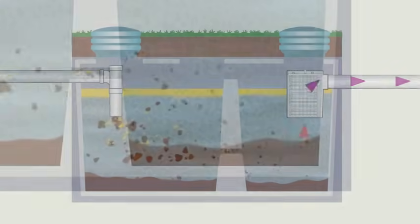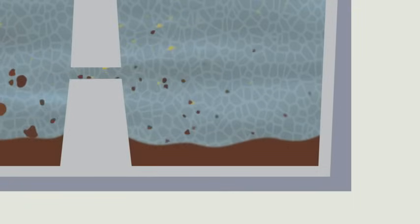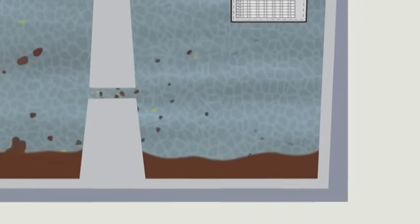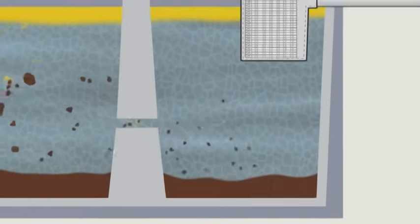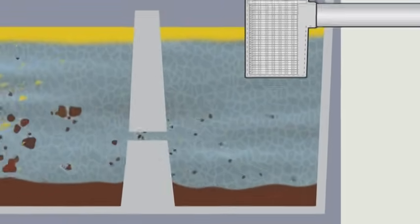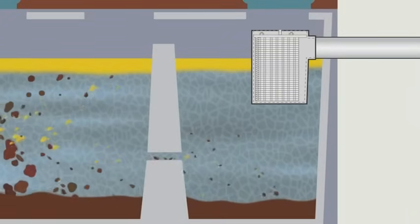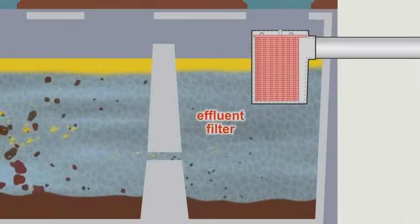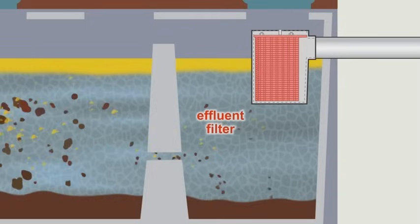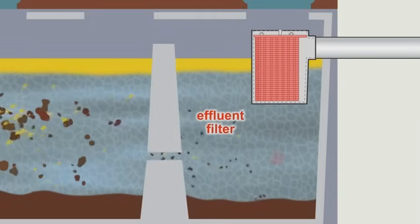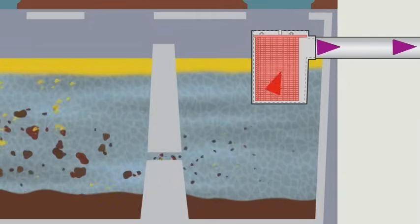A small amount of fine organic particles may settle in the second compartment of the tank, where almost all of what's left breaks down. In systems built or upgraded after 2006, an effluent filter is required to trap and help decompose any remaining particles before they get to the leaching bed.